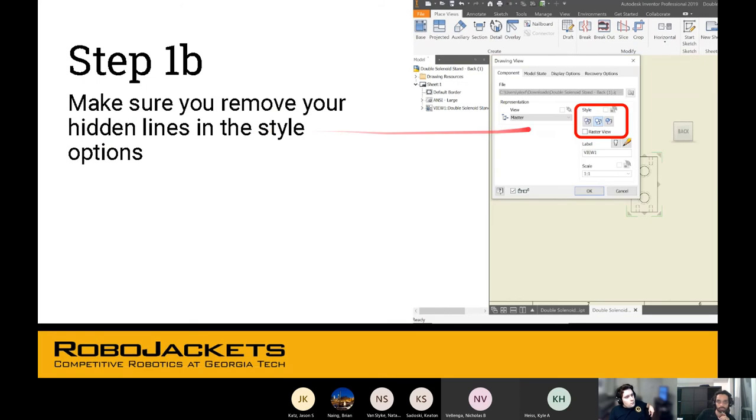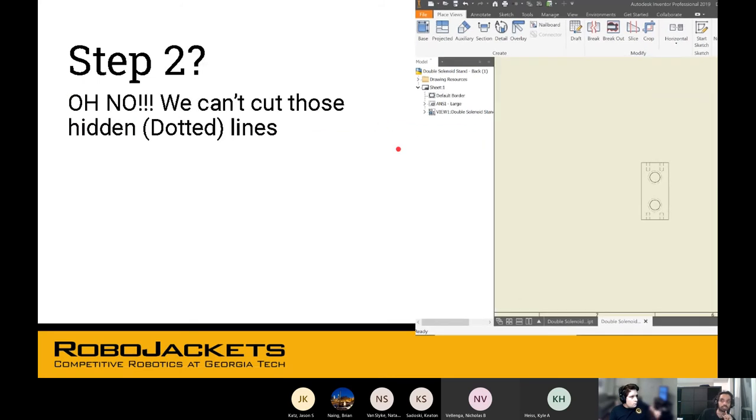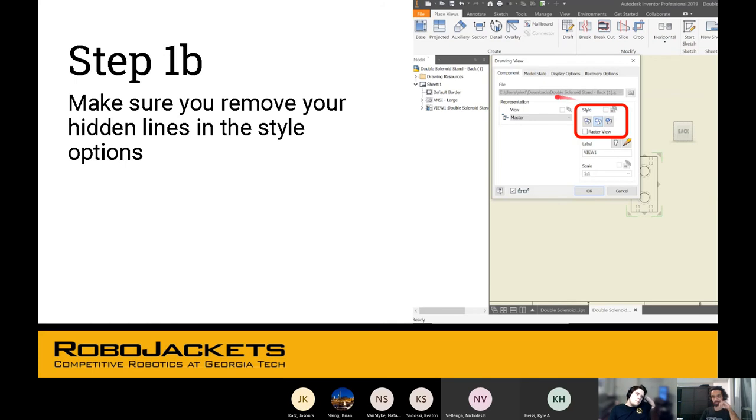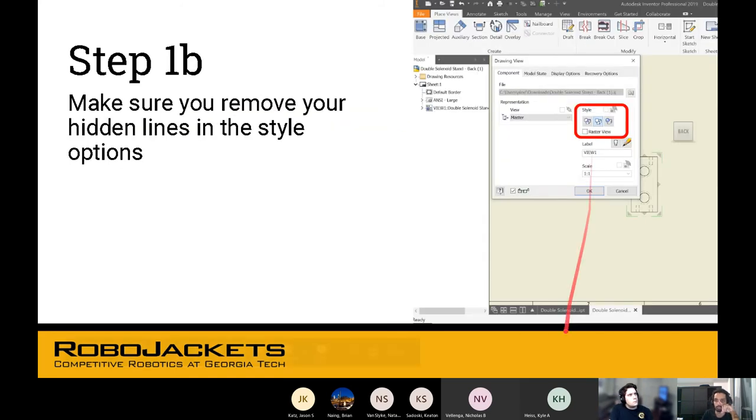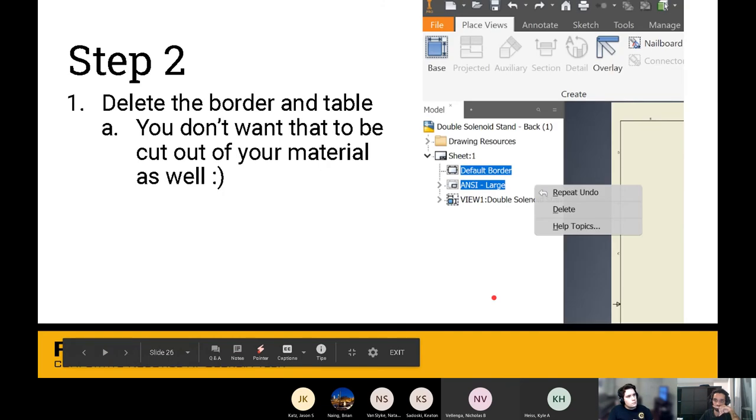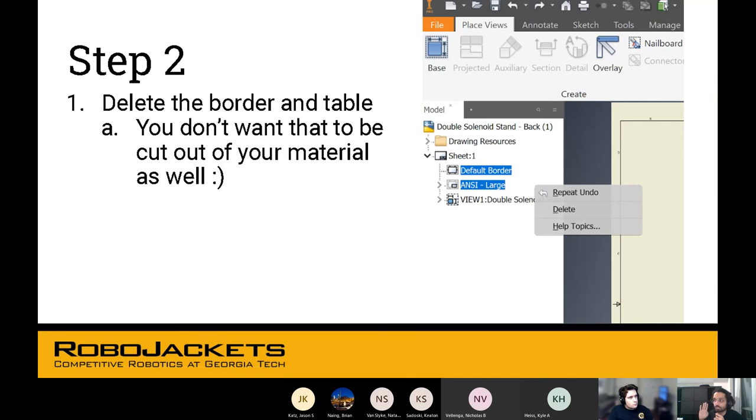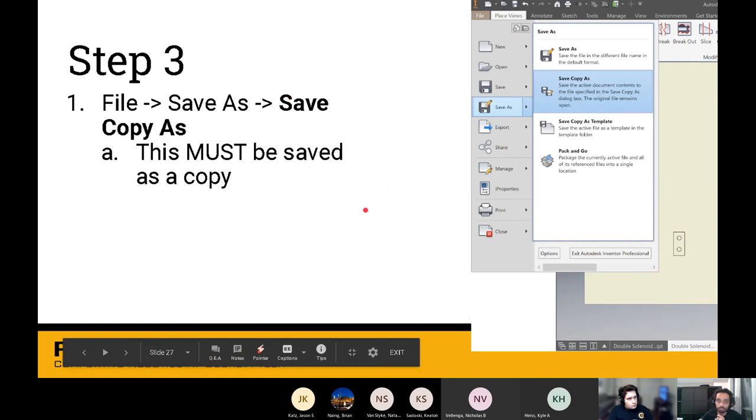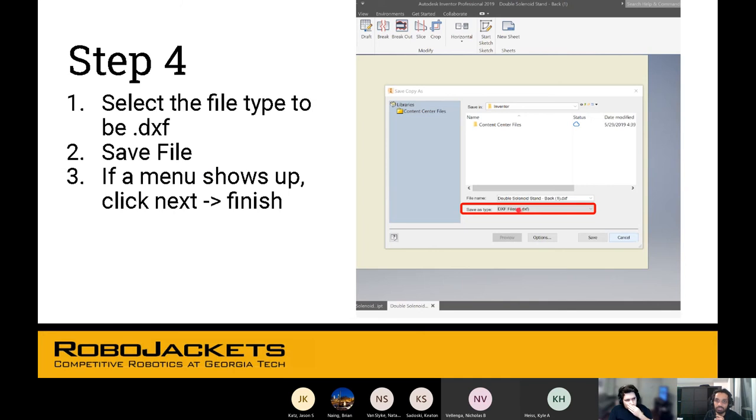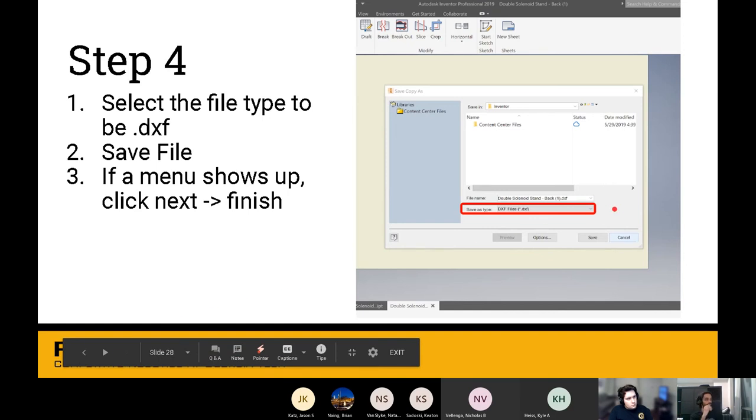Then there are dotted lines here. That could be a problem. We can't cut those hidden lines. Make sure you remove the hidden lines because the water jet literally just cuts all lines it sees. It's not going to know that this is supposed to be an internal component. There are a few ways to do that. In drawing view, there are these options here to display or hide hidden lines. You also have to delete the border and the table. The stuff we've seen before, like the title box and stuff, you don't want that in your drawing. You literally want your drawing to just be the face that you want to cut out of your material. Then you can save, save copy as. It has to be saved as a copy. And select the file as DXF. You're not making a regular drawing, you're making a DXF file. Then you just hit finish. That's it. Any questions regarding drawings or DXF files?